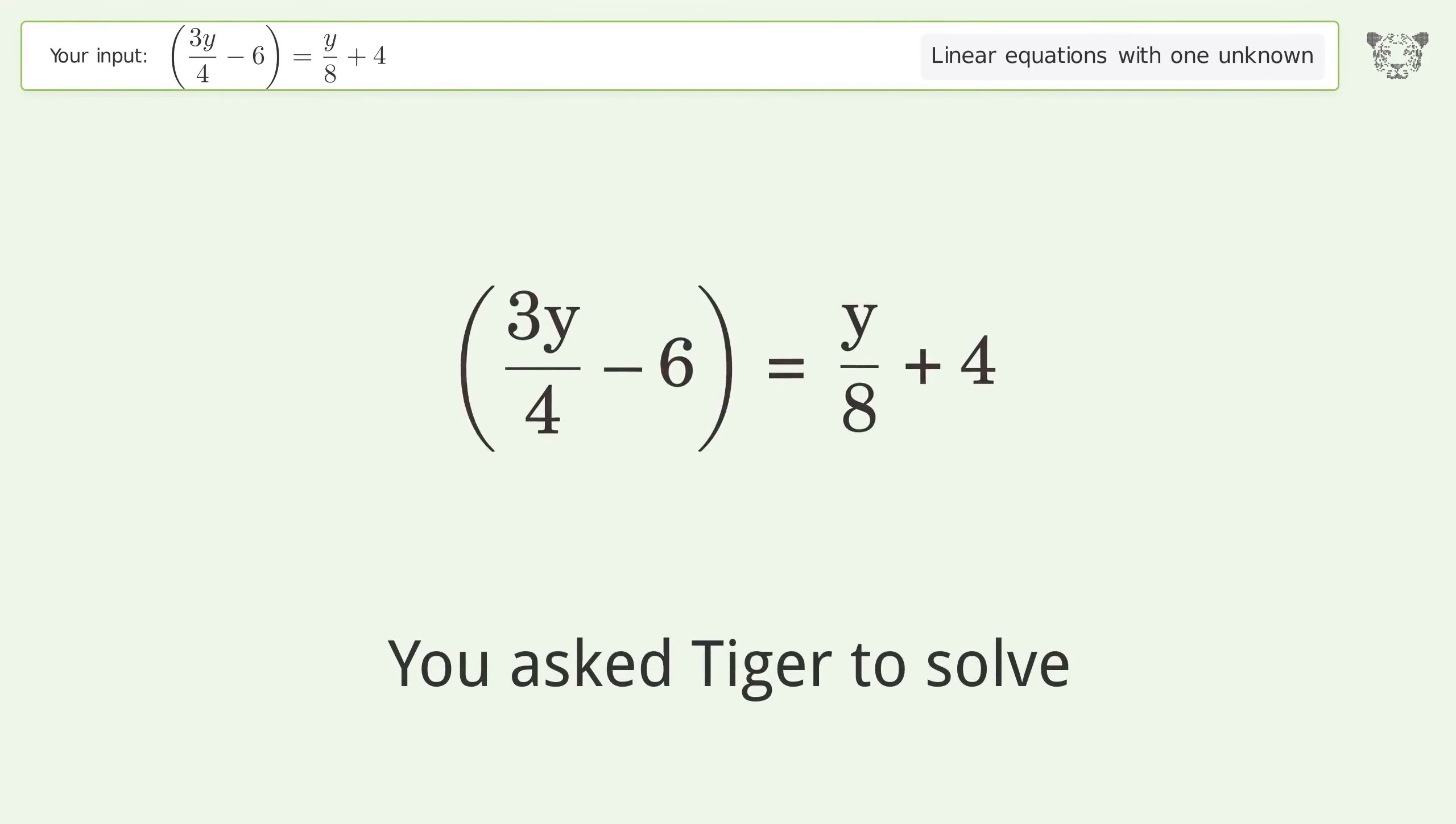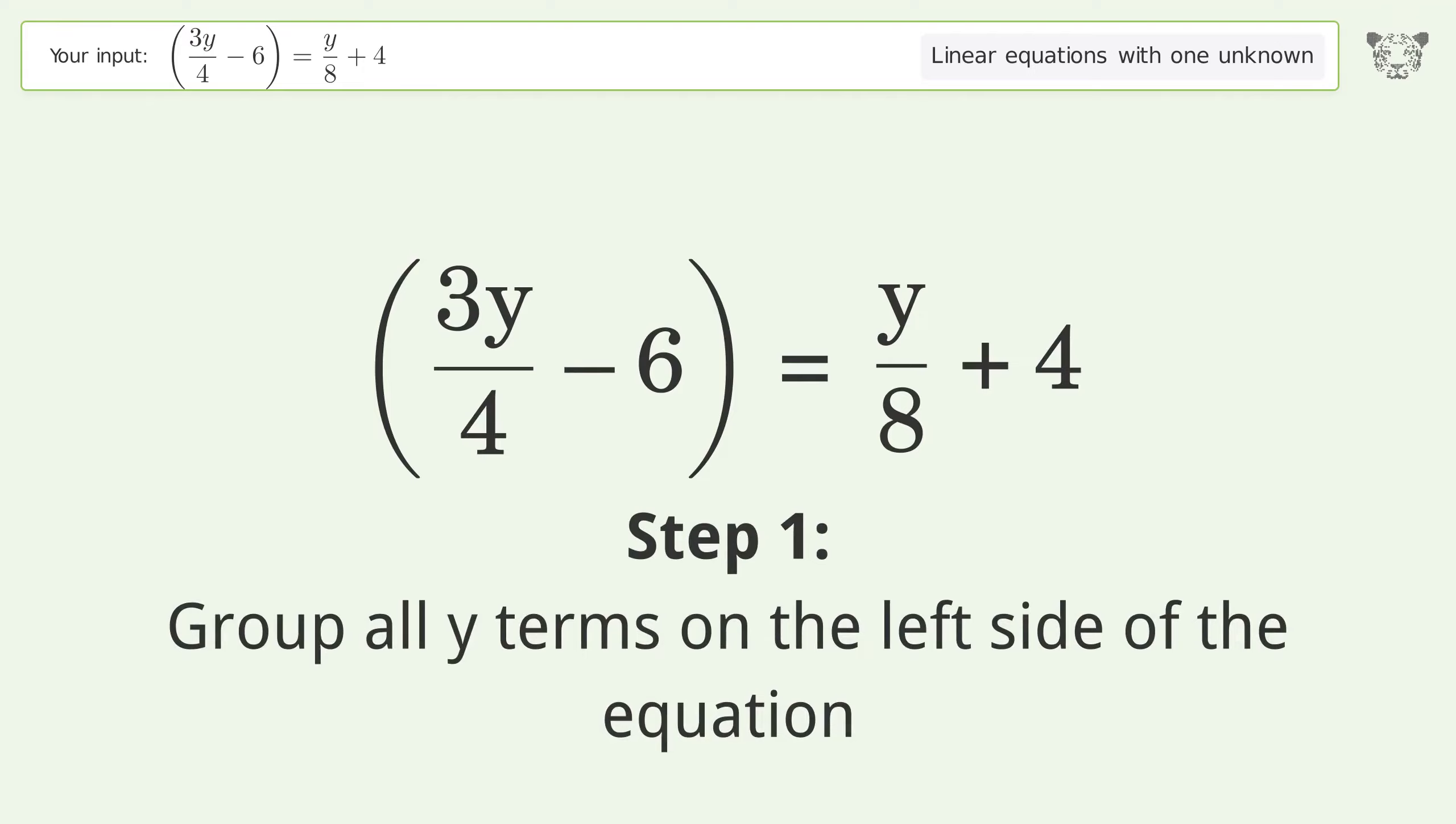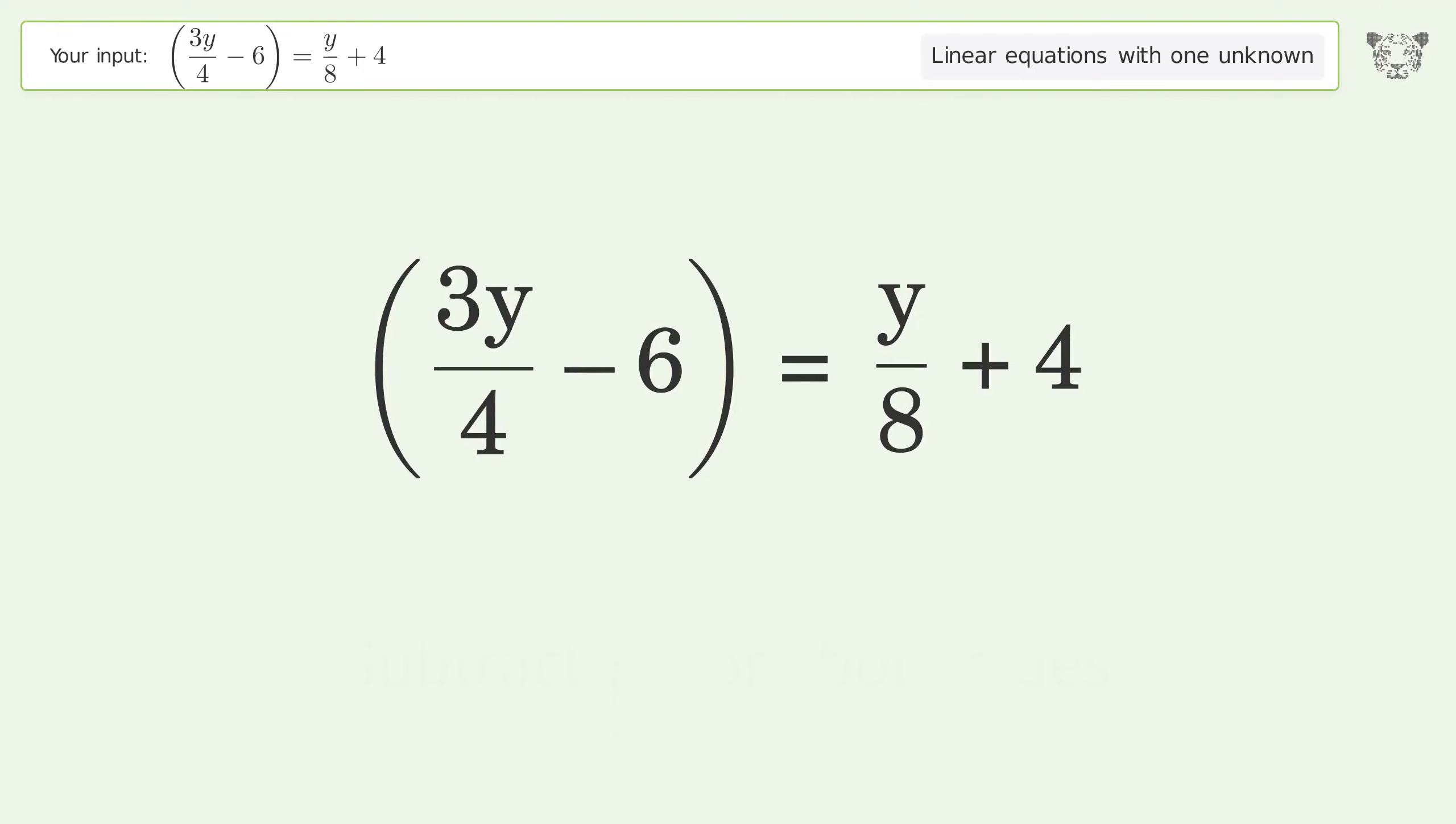You ask Tiger to solve this. It deals with linear equations with one unknown. The final result is y equals 16. Let's solve it step by step. Group all y terms on the left side of the equation. Subtract y over 8 from both sides.